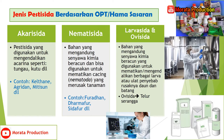Yang ketujuh yaitu akarisida, adalah pestisida yang digunakan untuk mengendalikan akarina seperti tungau, kutu, dan lain-lain. Contoh produknya adalah Keltane, Agridan, Mitisun, dan lain-lain.